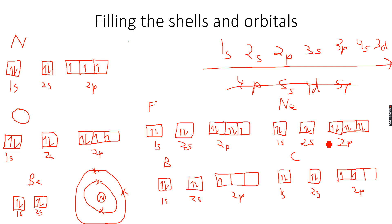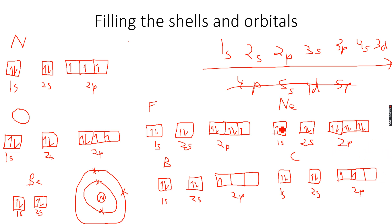An atomic orbital can only hold a maximum of two electrons in total. All orbitals in neon have two electrons, so that's why it's called a noble gas — it is so unreactive because no further filling can take place.